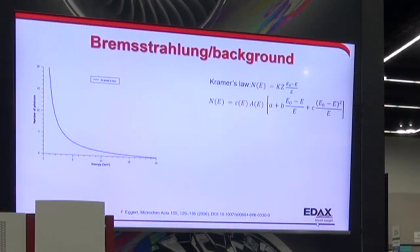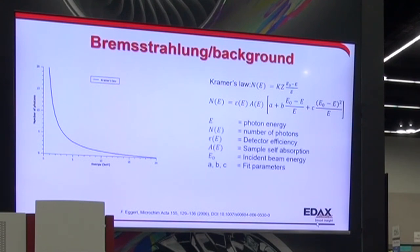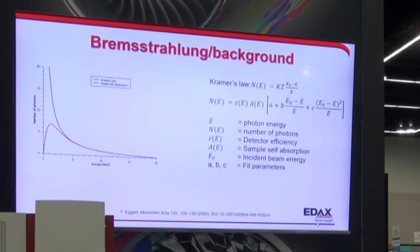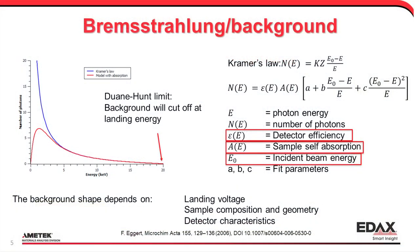We have the reference at the bottom — Frank Eggert is our main theory person. The point of the model we use is that we incorporate the sample self-absorption. Most of the low energy x-rays generated in the sample will never make it out because they are reabsorbed, and we scale by the detector efficiency as well. When we do that, we see a red curve overlaid on Kramers' law that is much closer to what you actually see in the spectrum.